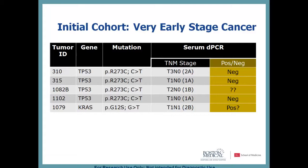Up until this point we hadn't looked at the actual patient data for these samples. We identified mutations in tumor genes that were in the hotspot panel, selected those tumors, applied AmpliSeq or Thunderbolts, then designed assays based on which looked best on first runs. When we went back and looked at the staging, we probably could have done better by picking later-stage patients. All of these patients are stage two or less, and three of them are stage one — so it's maybe not surprising we're not seeing a lot of circulating tumor DNA in these first five cases.